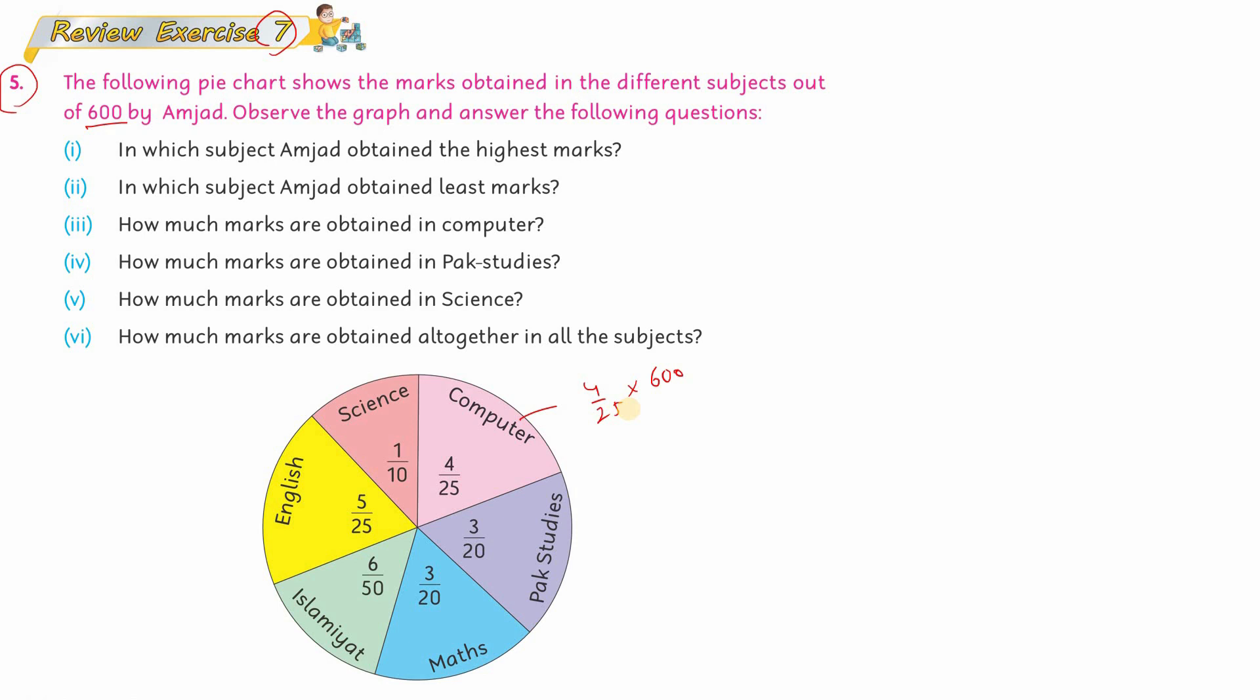You can directly cancel 600 with 25, which gives 24. Then 24 × 4 gives us 96. It is clear that Computer has 96 marks. Now for Science, it is 1 by 10, so 1 by 10 multiplied by 600. The 10 cancels with 600 to give 60. So Science has 60 marks.